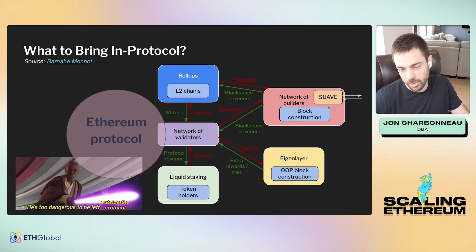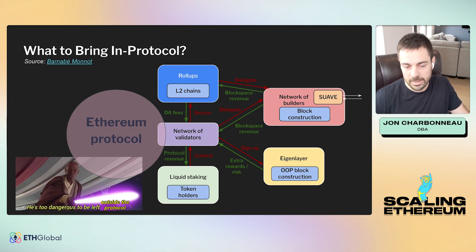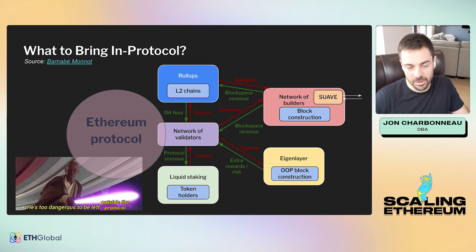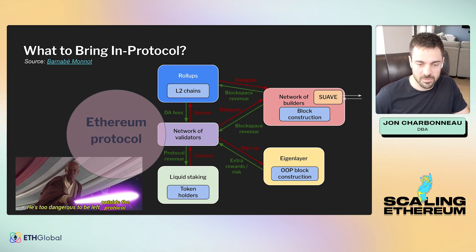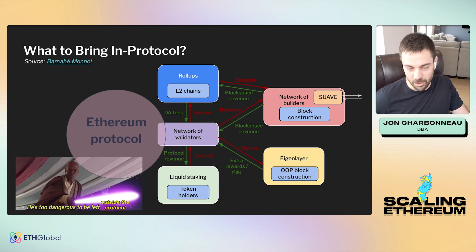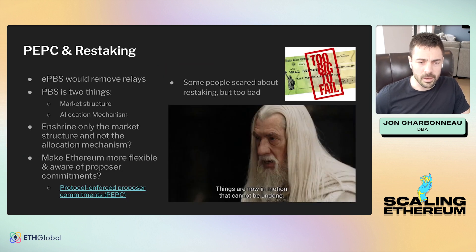The nice thing about in-protocol PBS is it removes the need for relays, getting rid of one vector for censorship. You remove another party and make the engagement between the proposer and the builder more trustless. But it does mean you're now enshrining additional complexity into the protocol, and there's a possibility that a year or two later you find out there's something you haven't thought of on the incentive side or economics. So there has to be a pretty high bar to actually enshrine something, and enshrining PBS will likely take some time.